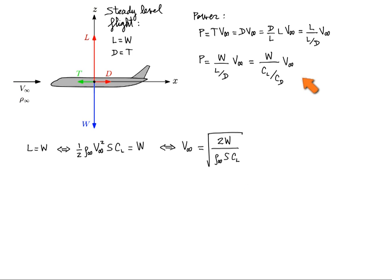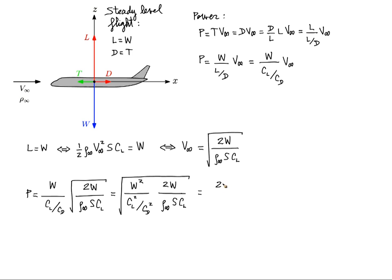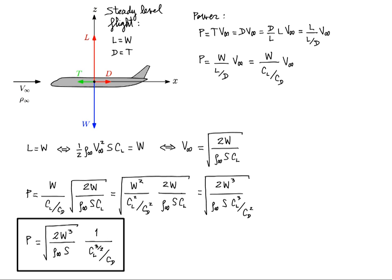From this we can get an expression for the flight velocity V infinity. Now let's plug V infinity back into our power expression. Let's put everything inside the same square root and clean it up a little bit. This is the expression we were looking for.